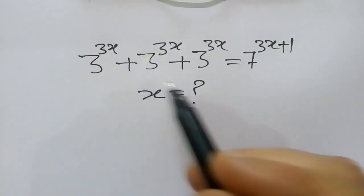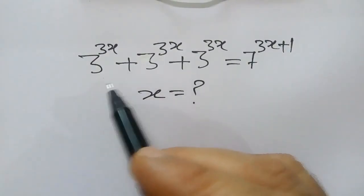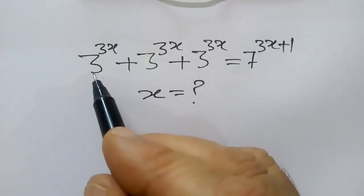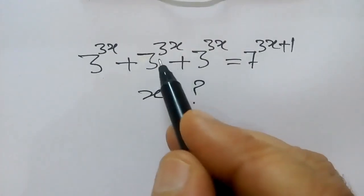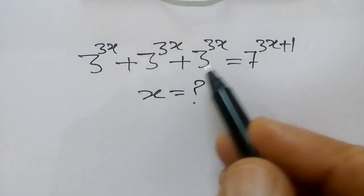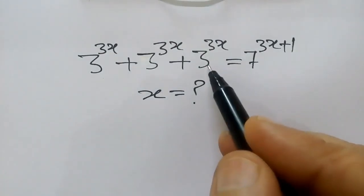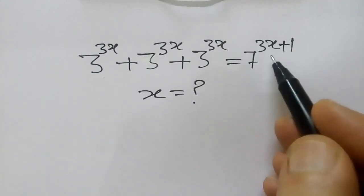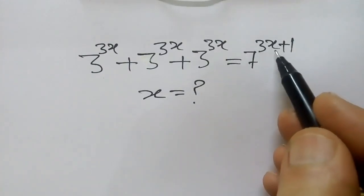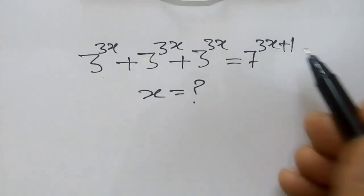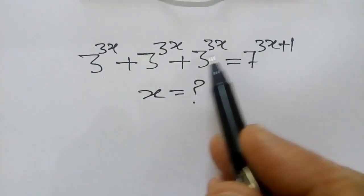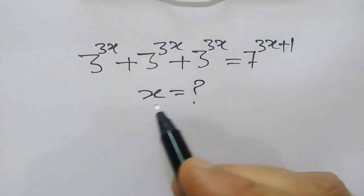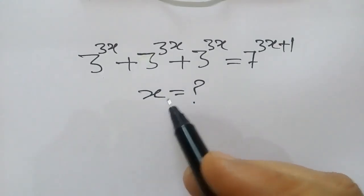Hi friends, today we have taken a nice exponential equation: 3 to the power 3x plus 3 to the power 3x plus 3 to the power 3x is equal to 7 to the power 3x plus 1. We have to solve this equation, or we can say we have to find out the value of x.